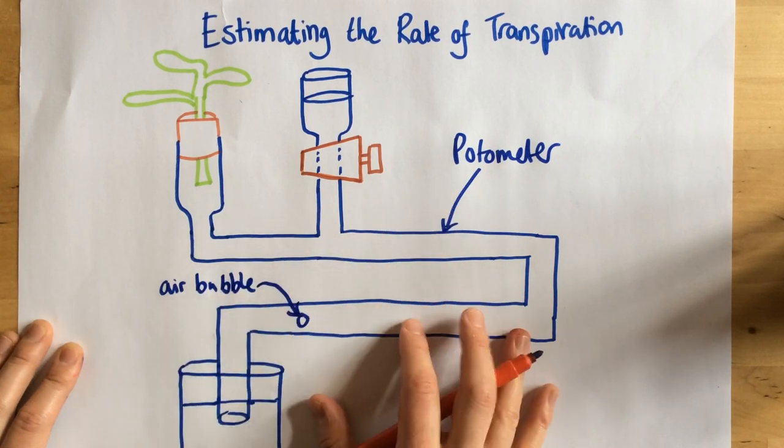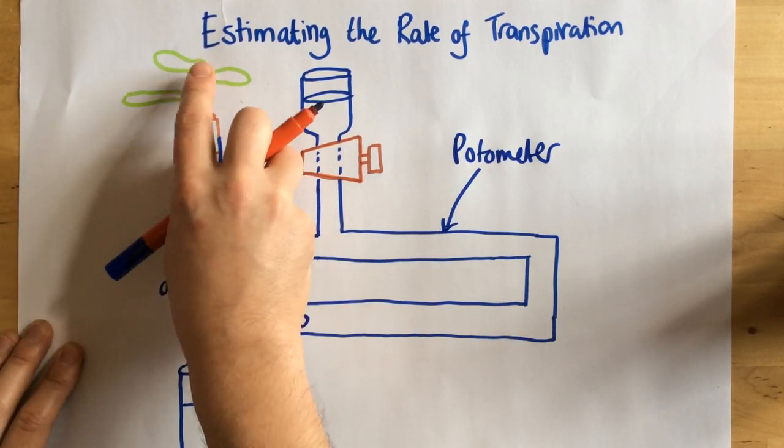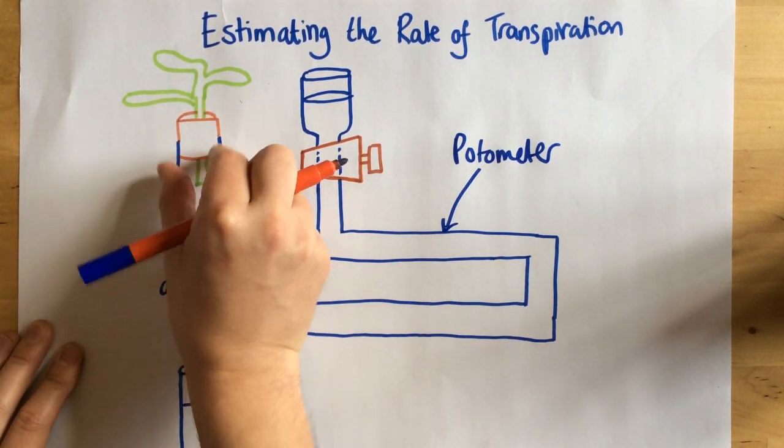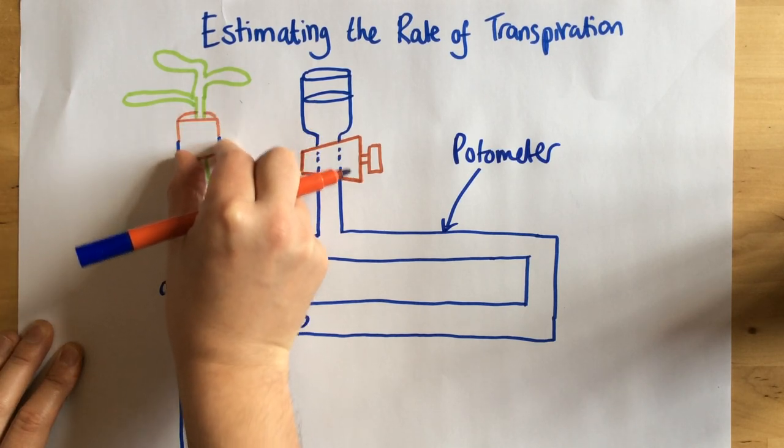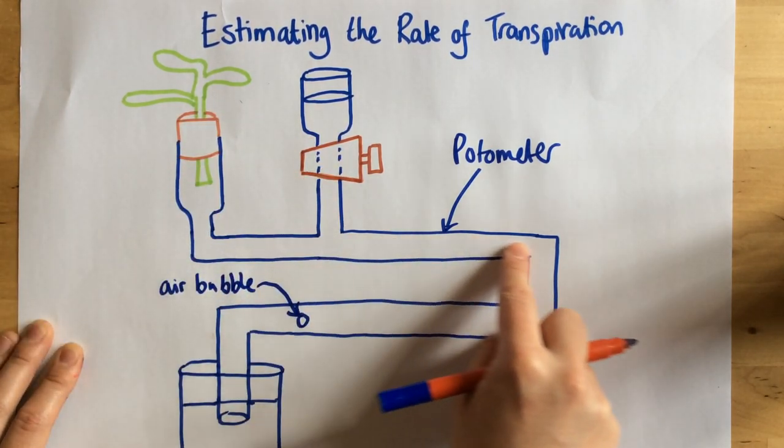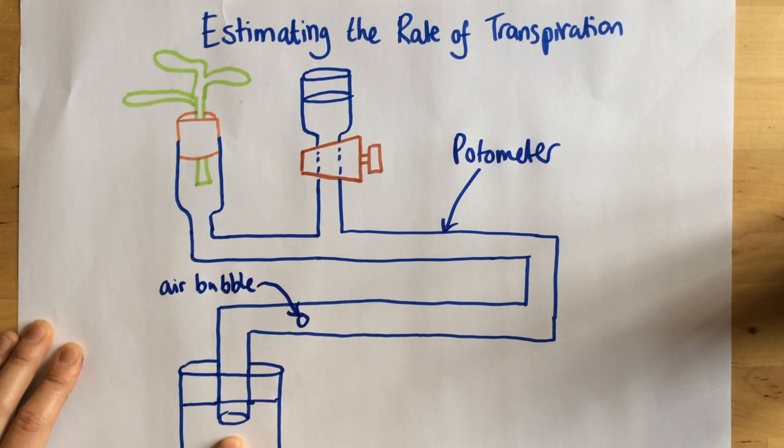So let's break it down and see what's going on. Now first of all, what we do is we have our plant right here. So our plant is held within a bung and all of these tubes here contain water.